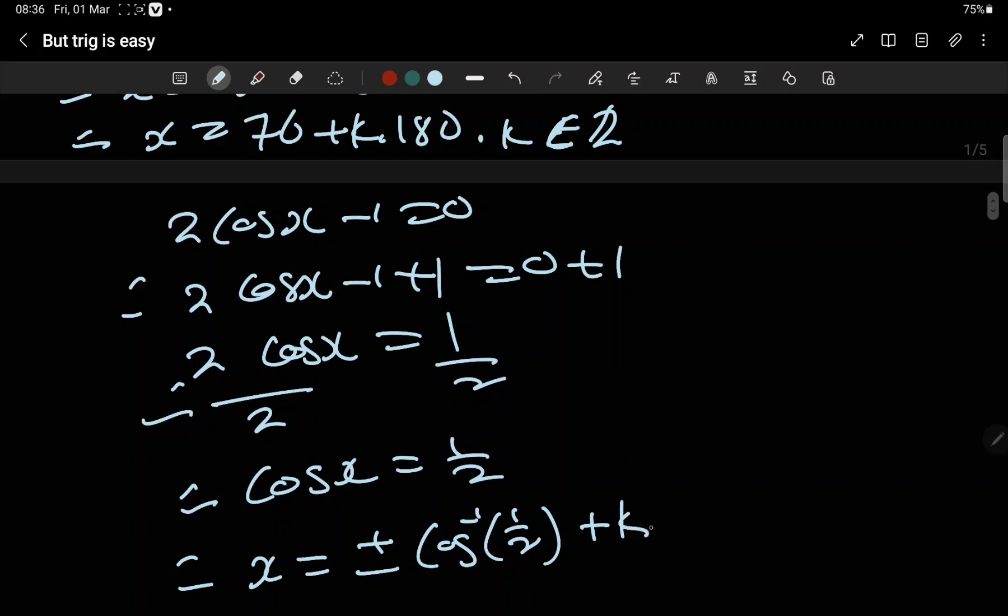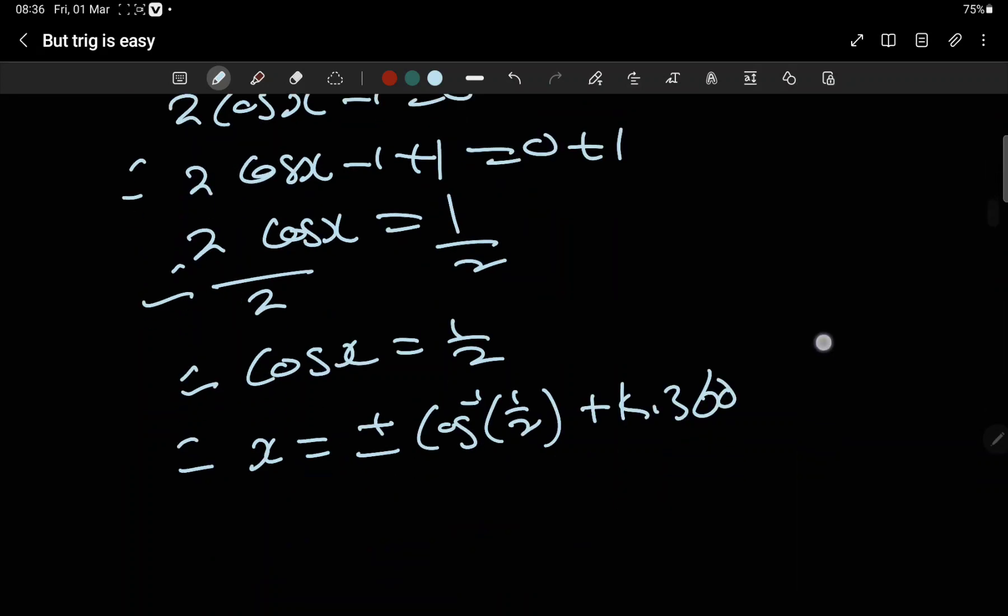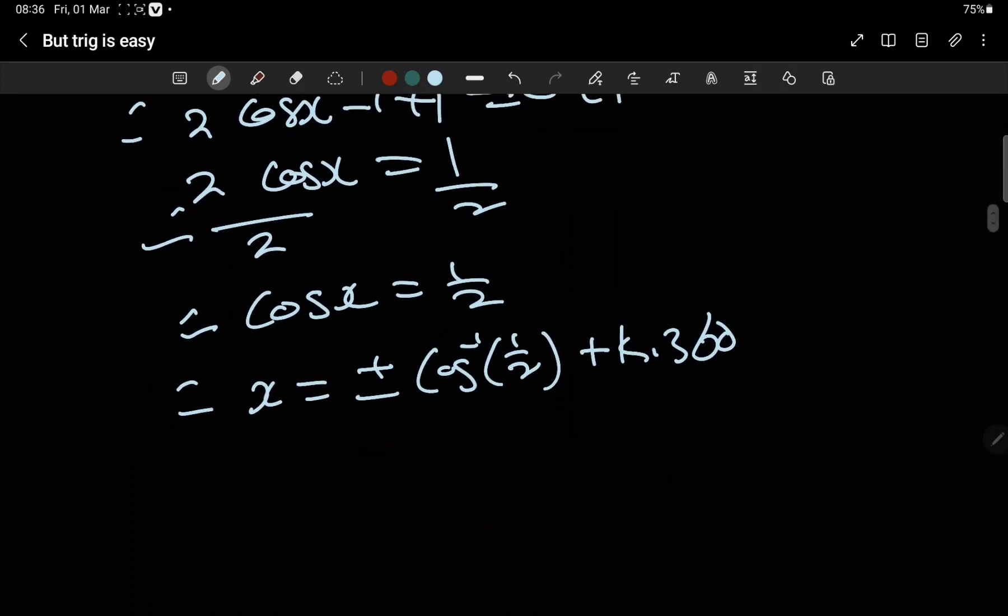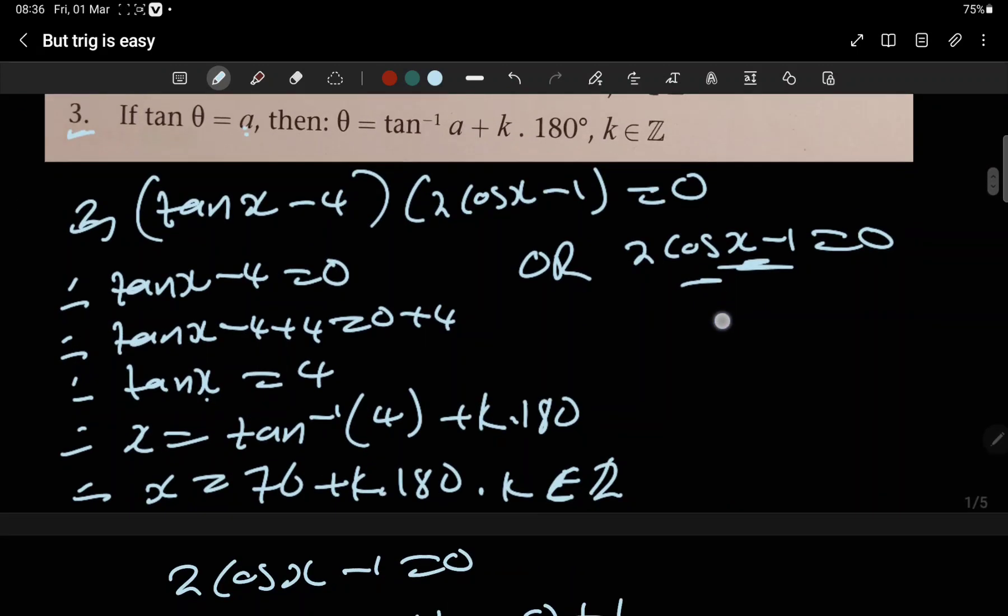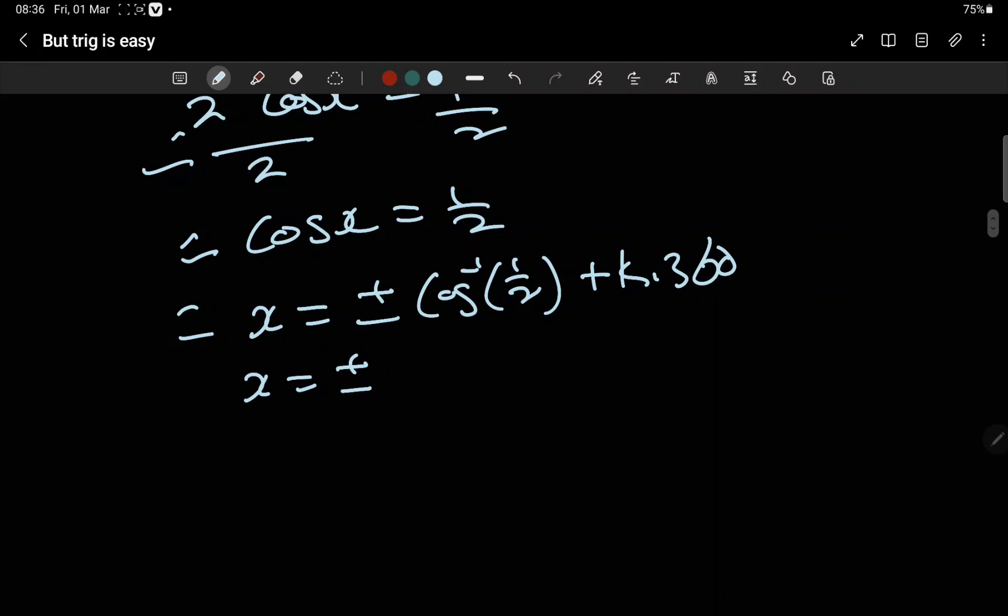X equals... is it right? Yes. Plus or minus... then we press the calculator: cos of one over two. Sixty plus k times 360. Easy.